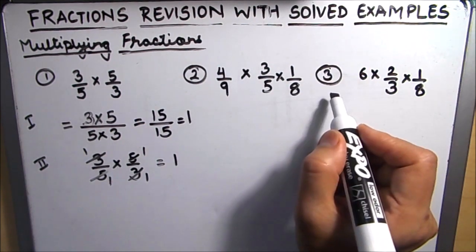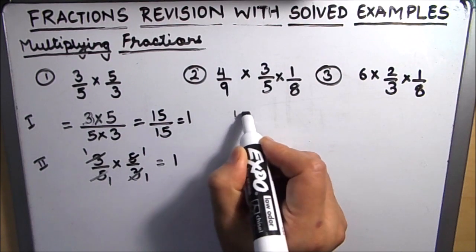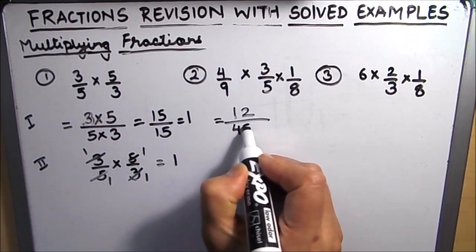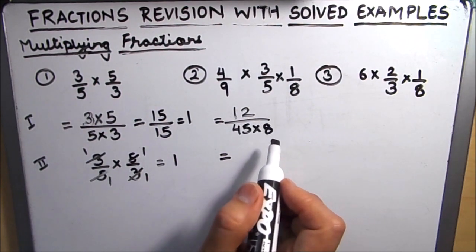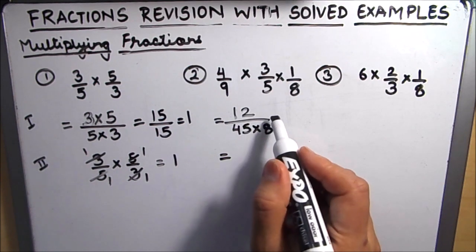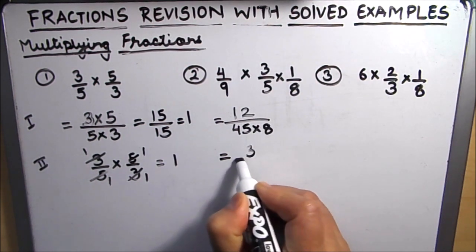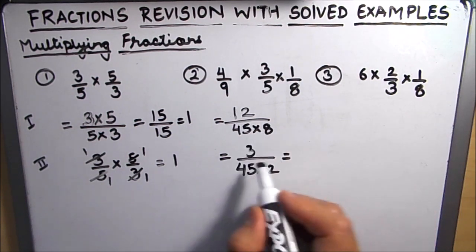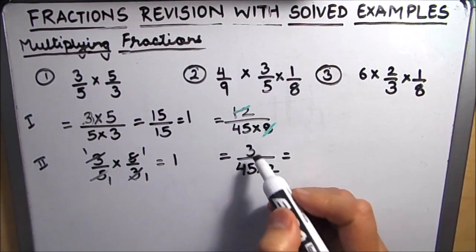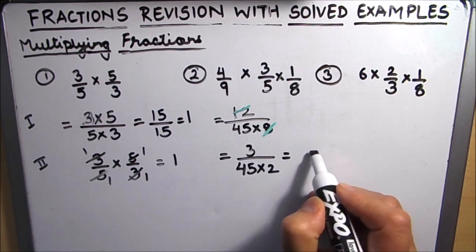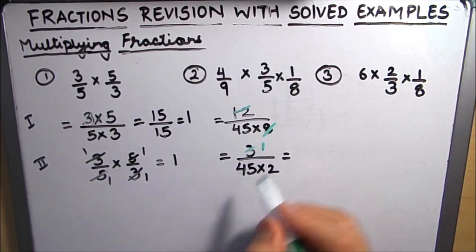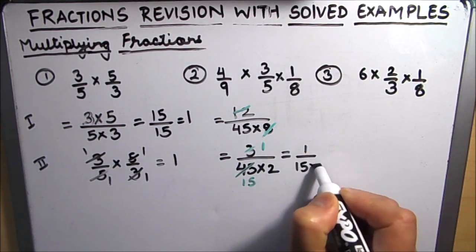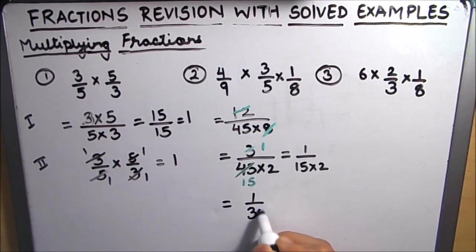The next example involves multiplying three numbers. The numerator is 4 times 3 times 1, which is 12, and the denominator is 9 times 5 times 8, which is 360. Since 12 and 8 share a common factor of 4, we divide: 12 becomes 3 and 8 becomes 2, leaving 3 over 45 times 2. Then 45 and 3 share a factor of 3, giving 1 over 15 times 2, which equals 1 over 30. This is our final answer.